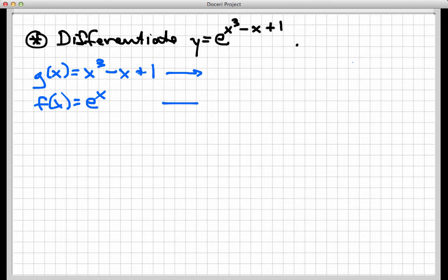So I'll need the derivative of each of these. So the derivative of g of x, very simple in this case, since g of x is a polynomial, is 3x squared minus 1. And f prime of x, the derivative of e to the x is just itself. So this is g prime, this is f prime.